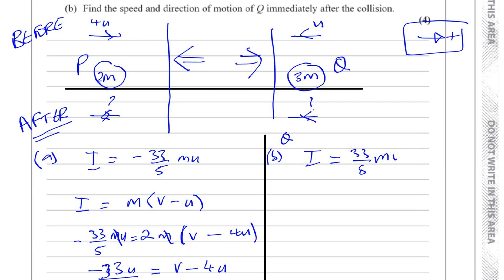Basically here, the impulse for Q is positive 33 over 5 mu. So we can say that the impulse equals 33 over 5 mu, and that's equal to the change of momentum. The mass of this is 3m this time, so you've got 3m. And the final velocity is what we have to find. And the initial velocity now is in the negative direction, so it's going to be V plus u. If we divide both sides by m and divide both sides by 3, that will give you 11 over 5u equals V plus u.